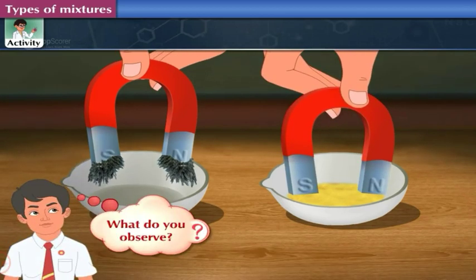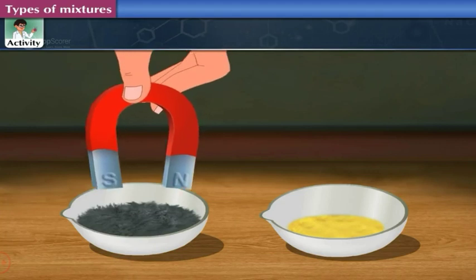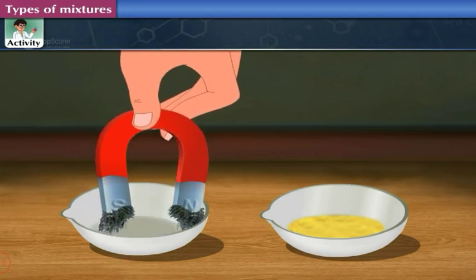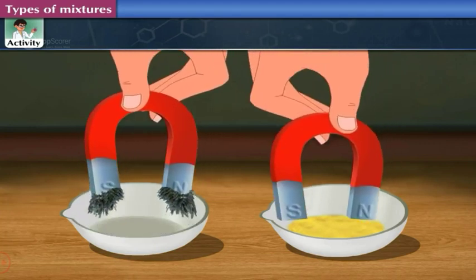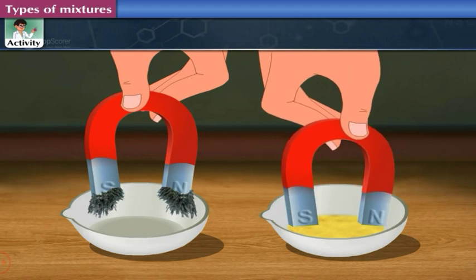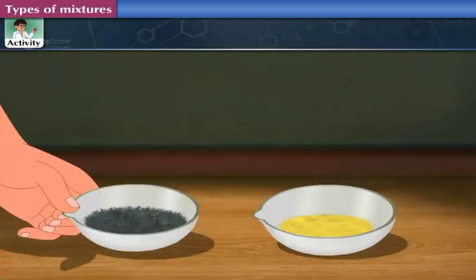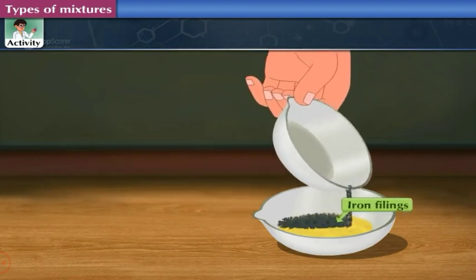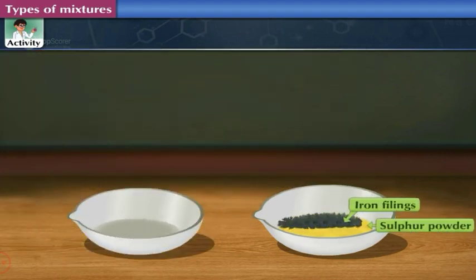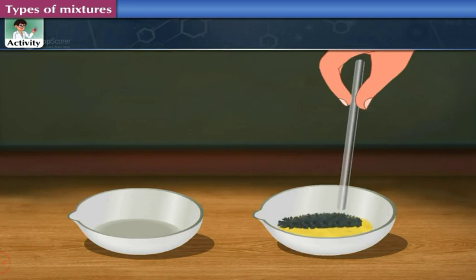The iron filings cling to the magnet, but the sulfur powder does not get attracted to the magnet. Now transfer the entire iron filings into the dish containing sulfur powder. Stir the contents using a glass rod.